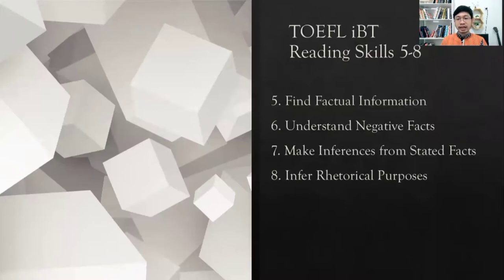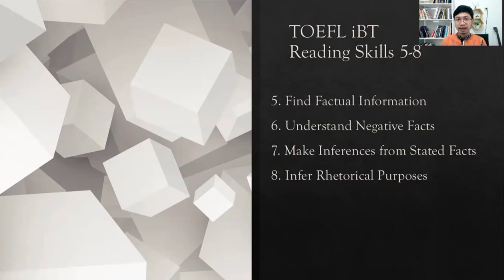Those four reading skills in TOEFL iBT that we're going to be focusing on today are: reading skill five, finding factual information — information that we can find in the reading passage — and reading skill six, understanding negative facts, which is information that we cannot find in the reading passage. So negative facts means we are going to try to identify the wrong information according to the reading passage.